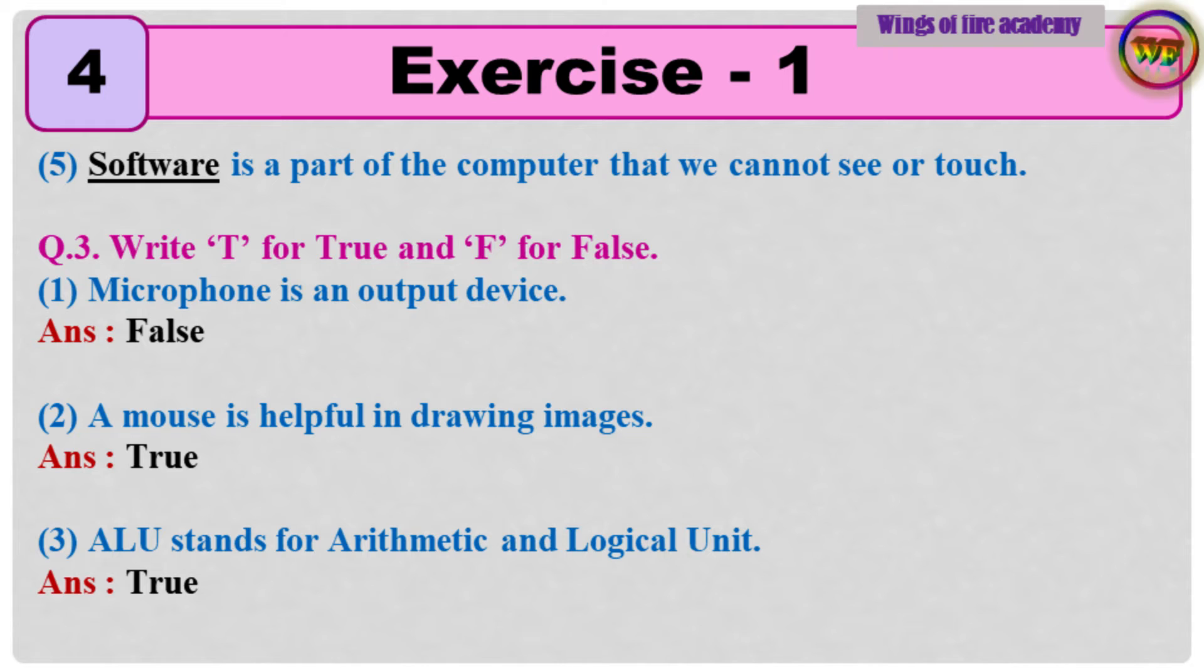Question number 3, Write T for true and F for false. 1. Microphone is an output device. Answer False. 2. A mouse is helpful in drawing images. Answer True. 3. ALU stands for arithmetic and logical unit. Answer True.